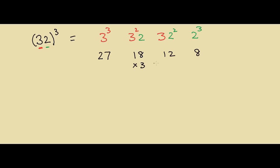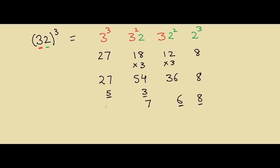Multiply the middle terms by 3, so 18 times 3 is 54 and 12 times 3 is 36. Now add them together: 8, then 6 with 3 as carry-over, then 7 with 5 as carry-over. Adding the carry-over of 5 gives 32, so the answer is 32,768.